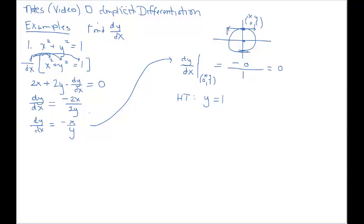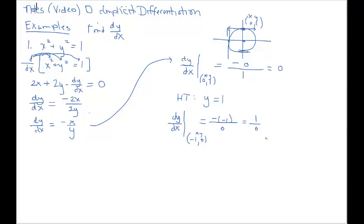Let's also look at the point (−1, 0). It's very obvious that this is a vertical tangent line, so the slope would not exist. Using our derivative, we get negative (−1) over 0, which is undefined — confirming there's no slope and we have a vertical tangent line. The equation of that tangent line is x equals negative 1.